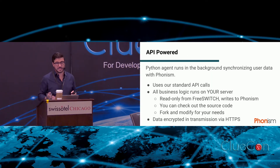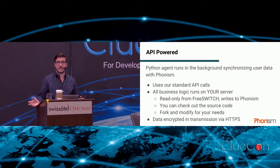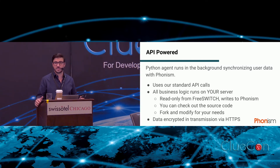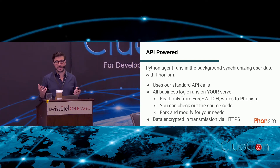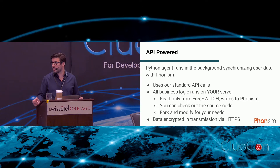The implementation of this is pretty simple. It is API-powered using REST APIs. It is a Python application — we call it an agent — that runs in the background on your FreeSwitch server. It uses standard calls through our REST API. The business logic of what this agent is doing is all in the Python code, so it is super easy to audit. You can fork our repository. And an important piece of this is all the data interchange between the two systems is encrypted.